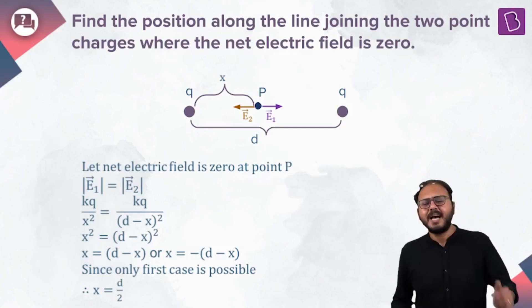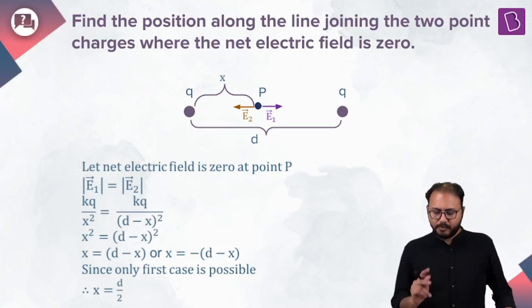The math checks out. That's why qualitative analysis is so important. So for two equal positive charges, the null point is the midpoint of the line joining them.